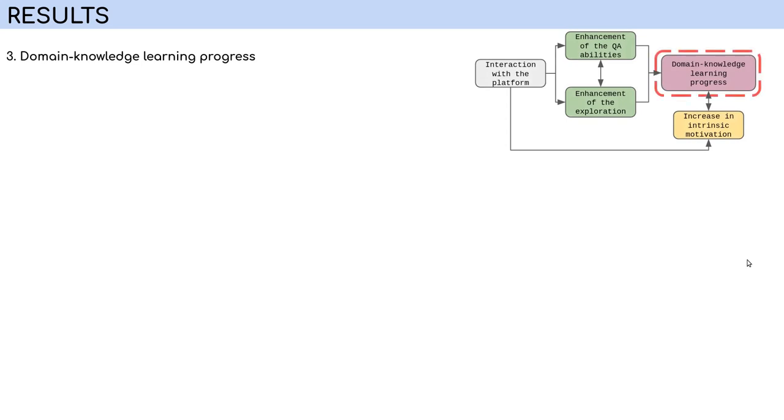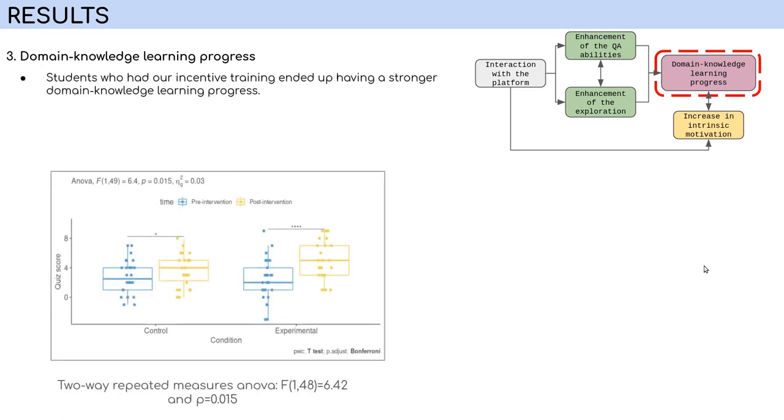Finally, for the domain knowledge learning progress, we saw that children who had the propositions of the knowledge gaps gained significantly more new information than the group that did not have this, even though the two had similar initial levels.